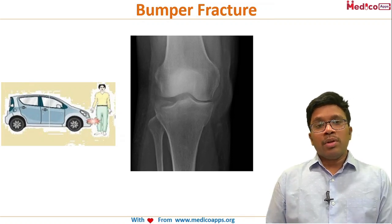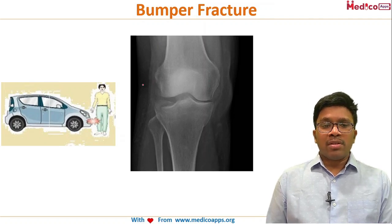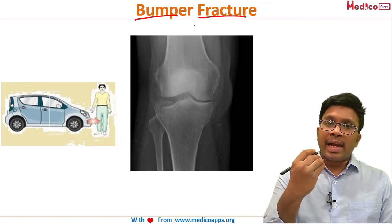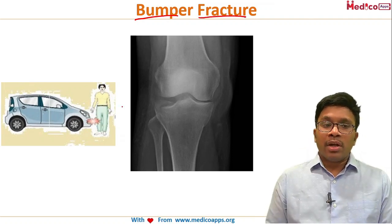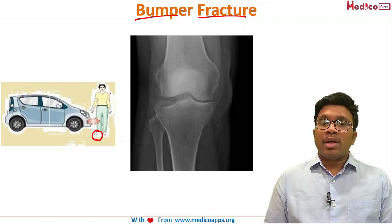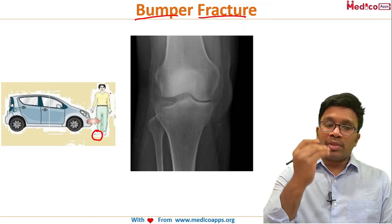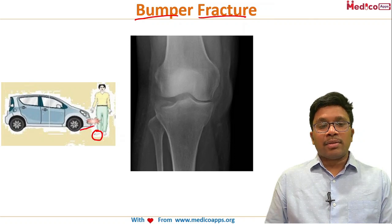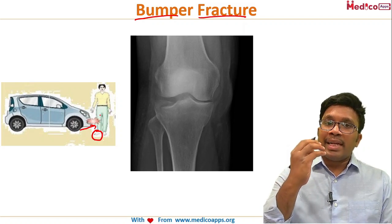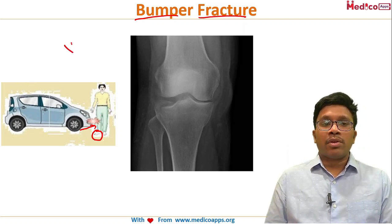Moving to named fractures of the lower limb — the first is the bumper fracture. Here the right lower limb is stationary with the foot on the ground, and there is an impact from the lateral aspect of the right knee by a car, applying a valgus force.